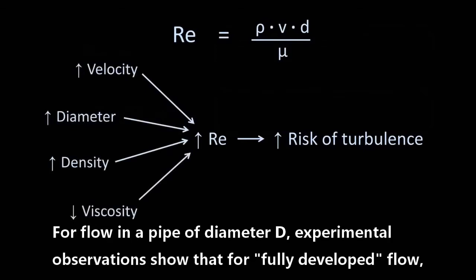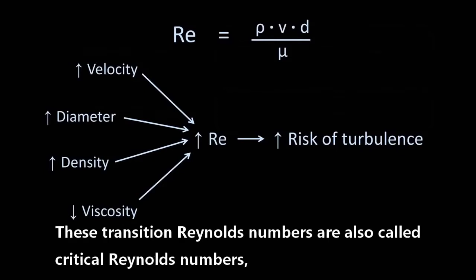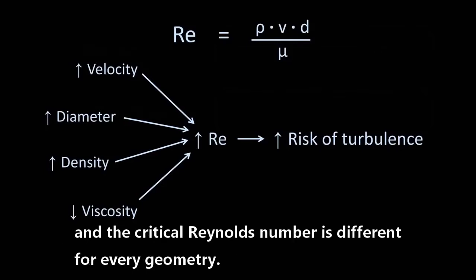For flow in a pipe of diameter D, experimental observations show that fully developed laminar flow occurs when Reynolds number is under 2300, and turbulent flow occurs when Reynolds number is over 10,000. These transition Reynolds numbers are also called critical Reynolds numbers, and they are different for every geometry.